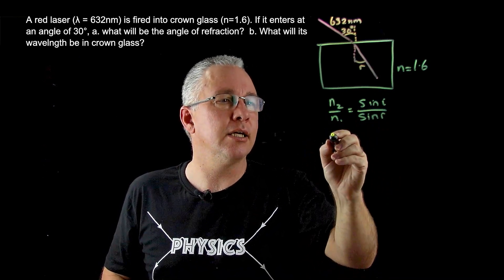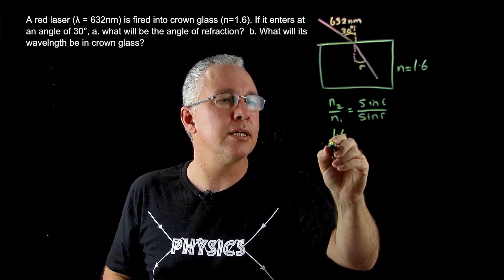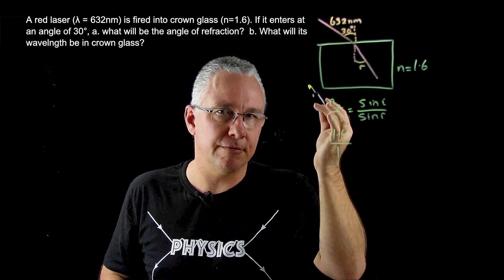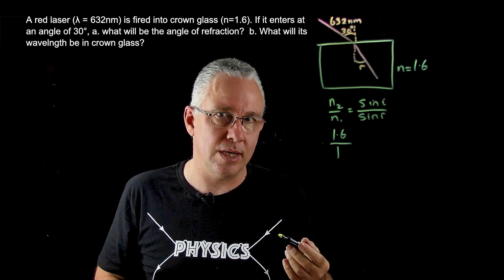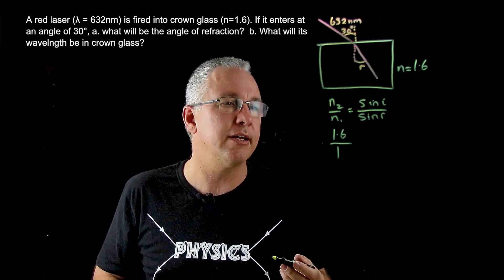So if we substitute everything in, we get 1.6 over 1. Now if it's a vacuum, it is 1. If it's air, it's like a really close value to 1, 1.0006 or something to that effect.